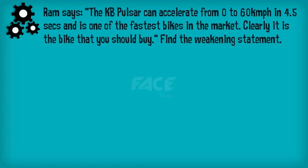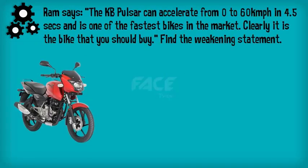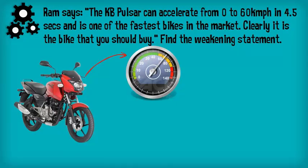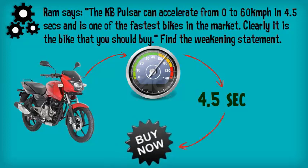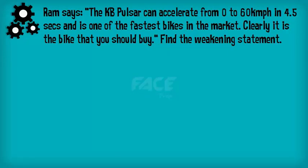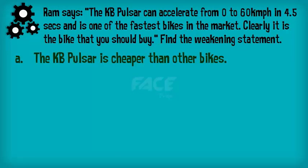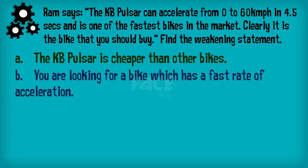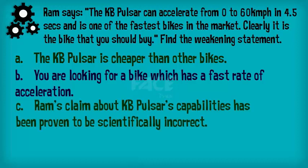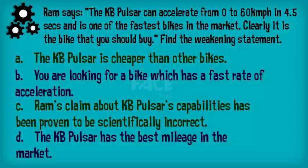Let us take the same example mentioned previously. Ram says the KB Pulsar can accelerate from 0 to 60 km per hour in 4.5 seconds and is one of the fastest bikes in the market. Clearly, it is the bike you should buy. Which of the following statements most weakens the argument? A. The KB Pulsar is steeper than other bikes. B. You are looking for a bike which has a fast rate of acceleration. C. Ram's claim about KB Pulsar's capabilities has been proven to be scientifically incorrect. Or D. The KB Pulsar has the best mileage in the market.